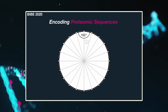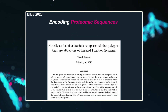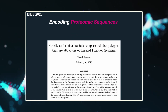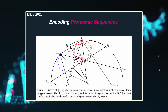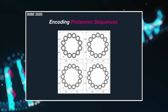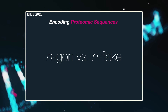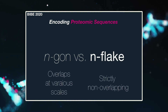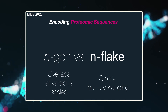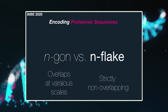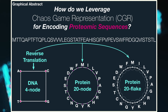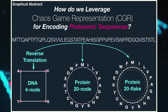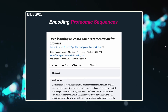Promisingly, in 2015, Tsanov generalized the CGR for n's greater than 4 upward to infinity-gons and infinity-flakes. The distinction between an n-gon and an n-flake is that the latter is strictly non-overlapping — that is to say, variable-scaled n-flakes are precisely separable from one another. This generalization enables the creation of strictly self-similar n-flakes, with the most recent protein-based applications leveraging the n equals 20-flake by Loshal et al.